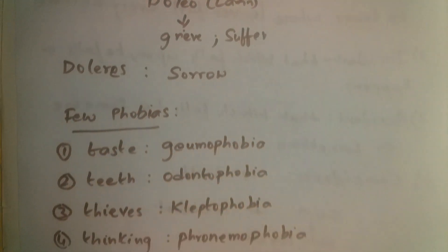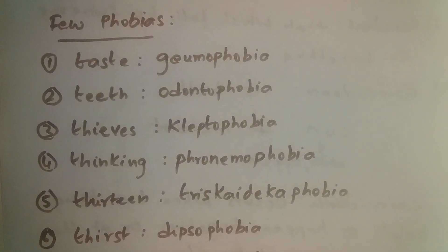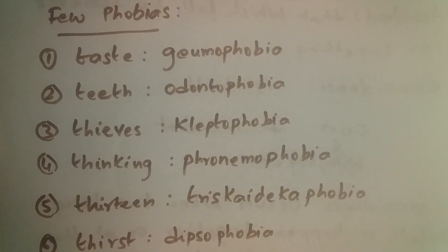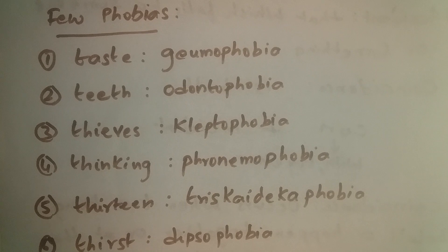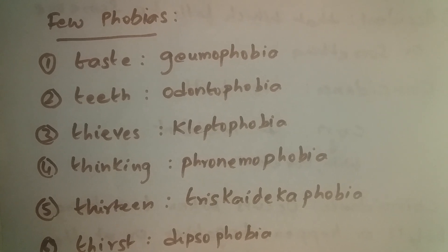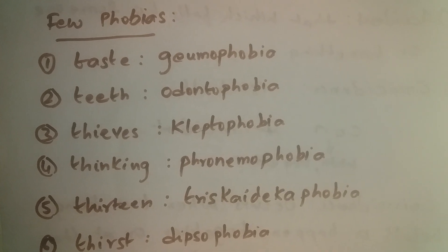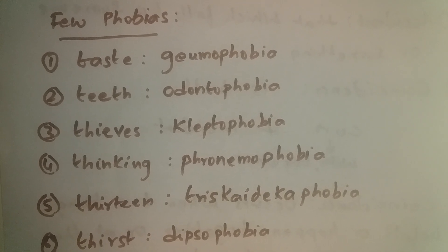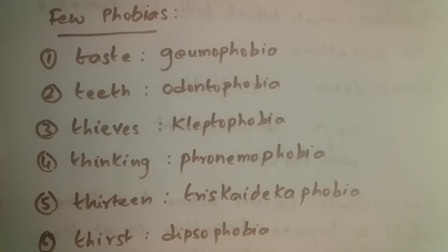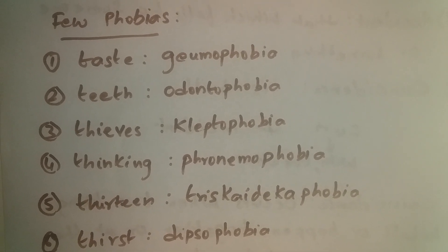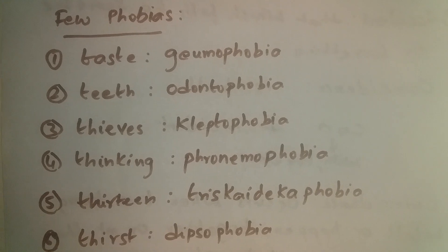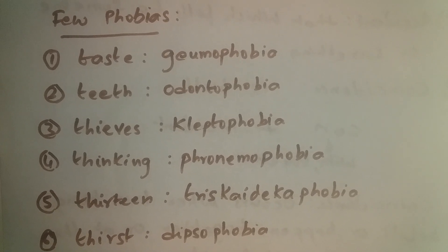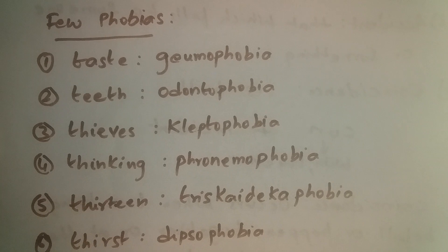Let's understand a few phobias. If you have fear of taste, that is geumaphobia. If you have fear of teeth, that is odontophobia. Leptophobia means fear of thieves. Phronemophobia is fear of thinking. Triskadekaphobia is fear of 13.